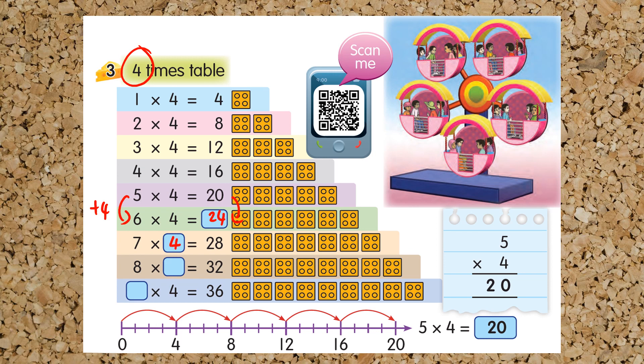7 multiplied by 4 equals 28, 8 multiplied by 4 equals 32, and this is 9. 9 multiplied by 4 equals 36.